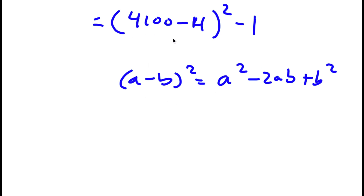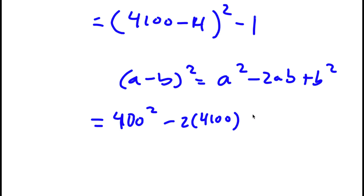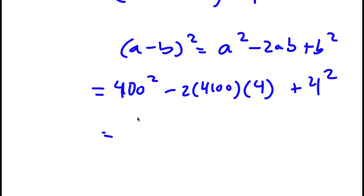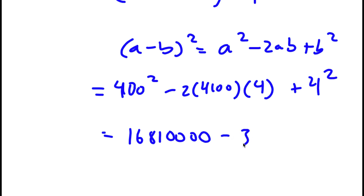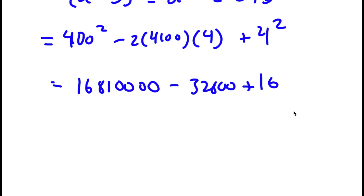So expanding (4100 minus 4) squared, this equals 4100 squared minus 2 times 4100 times 4 plus 4 squared. Now 4100 squared is 16,810,000, and 2 times 4100 times 4 is 32,800, plus 16. And we can't forget the minus 1 at the end.